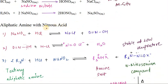Aliphatic amine with nitrous acid: We have Na2O2. We will first freshly prepare the nitrous acid by reacting sodium nitrite with hydrochloric acid.